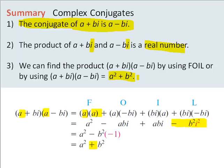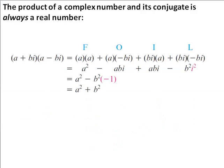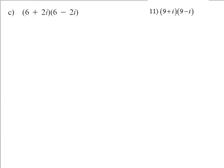So let's practice a couple and see what we get. So here, I'm going to do 6 times 6 is 36. 6 times negative 2i would be negative 12i.